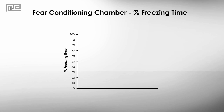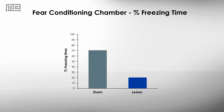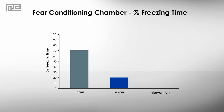The fear conditioning chamber allows us to test the effects of lesions of certain brain areas on learning. Typically, animals with lesions will spend less time freezing in response to the conditioned stimulus compared to control animals, because they are less capable of associating the two stimuli. We can also use the fear conditioning chamber to test the effects of drugs and interventions that may improve associative learning, as shown by an increase in freezing behavior.